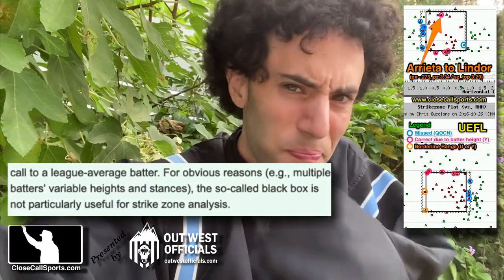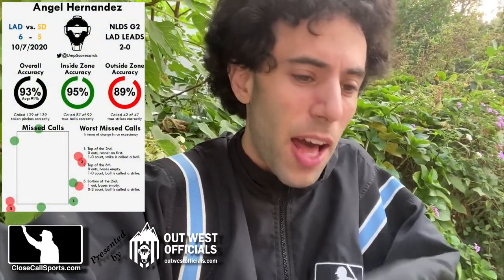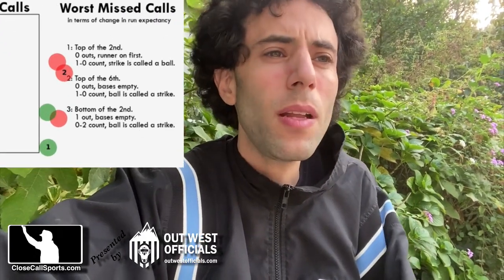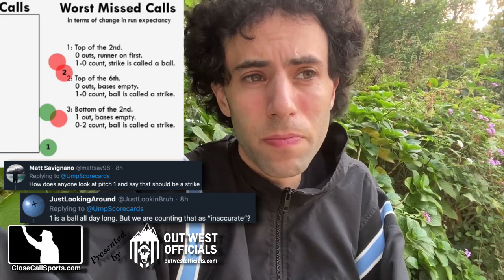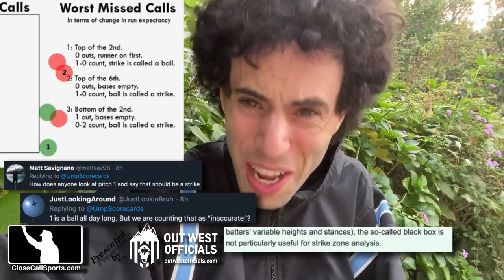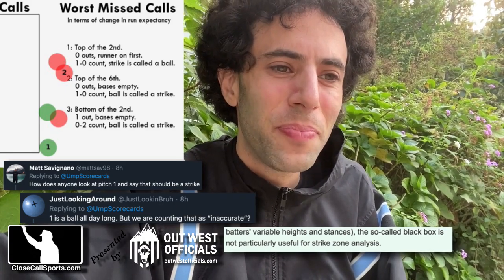So at the end of the day, why are the numbers different? Because of the way that the math works. I don't know what values scorecards is using specifically, but the values that we use, I vetted through MLB way back when. I read the rulebook and I know how to calculate the actual proper, accurate radius of a baseball.